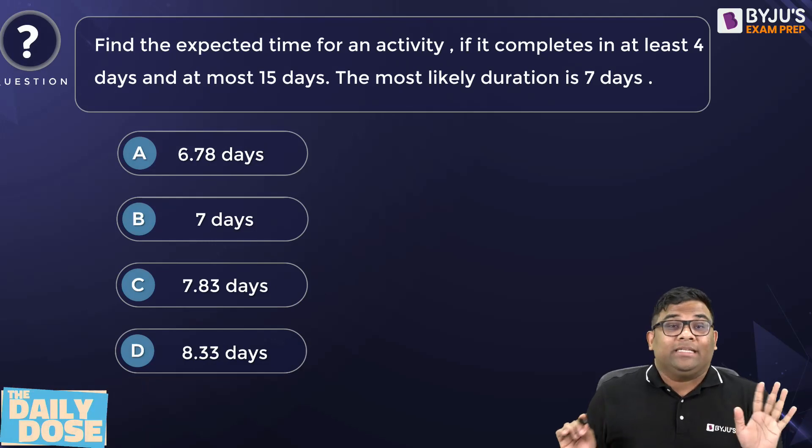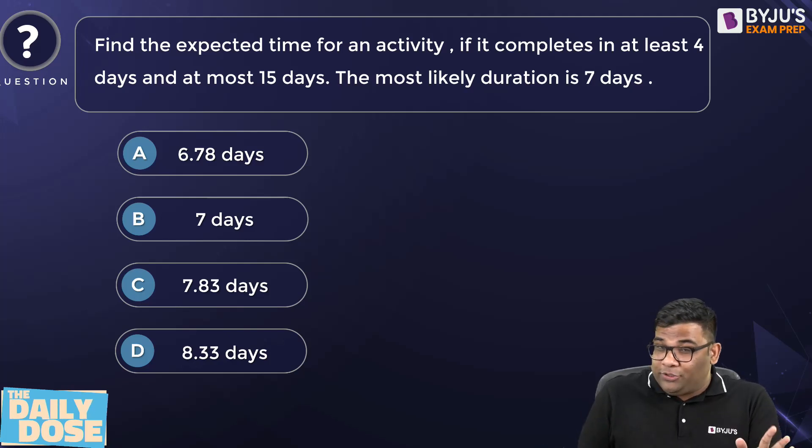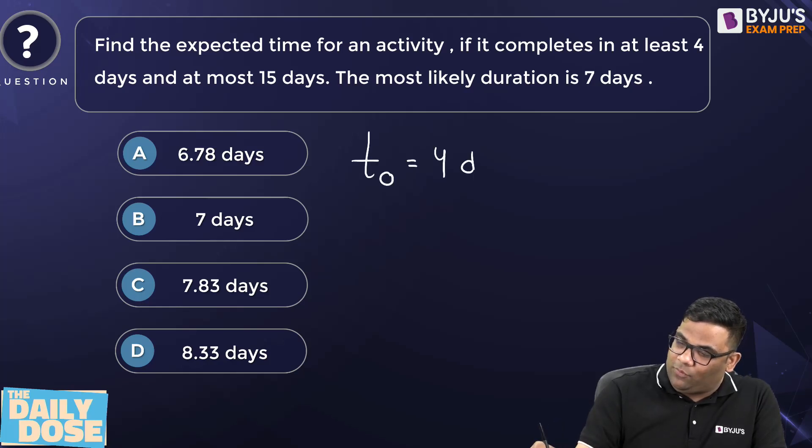You can see, this is a pretty simple question which they can ask in the examination. I want everyone to solve this question and write the answer in the comment section. This is one of the important topics from your PERT and CPM. Find the expected time of an activity if it completes in at least four days. At least means the minimum one, which is the optimistic - four days.